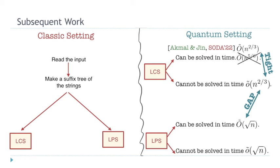I want to wrap up by mentioning a subsequent work that improves our algorithm for LCS. Their algorithm is actually tight: the runtime is n^(2/3), which matches the lower bound we give. So the upper and lower bounds for LCS are essentially matching up to polylogarithmic factors — it's tight. And for the LPS problem, everything is also tight.